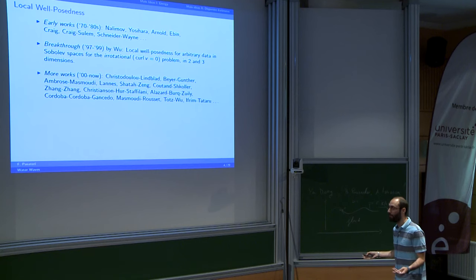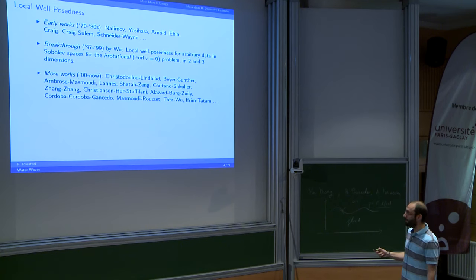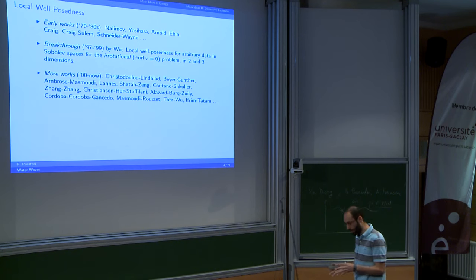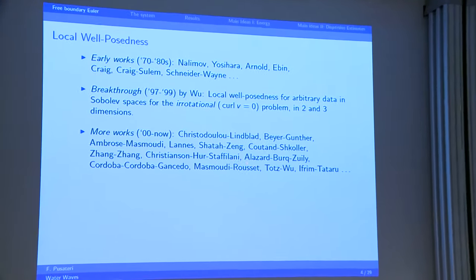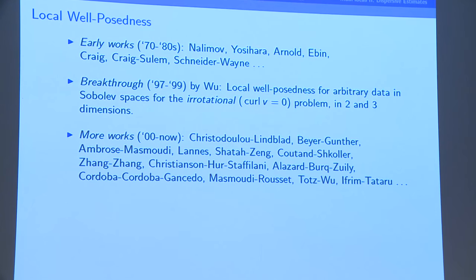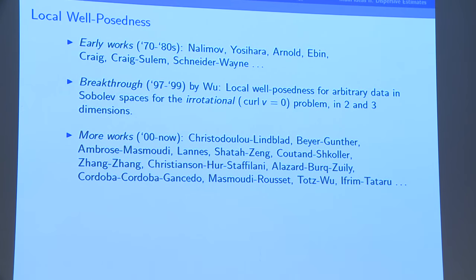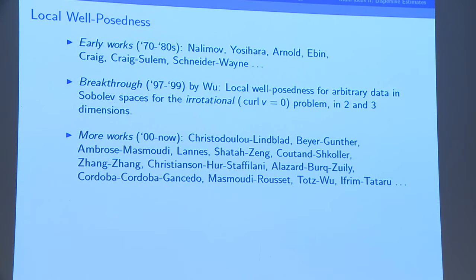Many more works tried to improve on this and cover more models. The case she treated was irrotational; Christodoulou and Lindblad had the vorticity. David Lannes had very general results where you can add the bottom with very general conditions. Then more works by Shatah-Zeng, Kunze-Schäler. People started thinking about how low can we go in terms of regularity on the surface, introducing Strichartz estimates — in works of Christianson, Hur, and Staffilani, and Alazard and Zuily who have a great series of results treating lots of models with the best regularity.